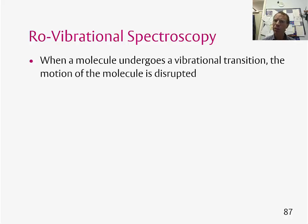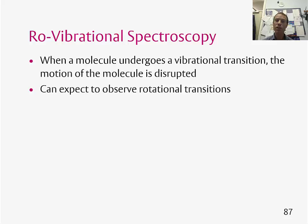When a molecule undergoes a vibrational transition — for example, v equals 0 up to v equals 1, the fundamental transition — the motion of the molecule is going to be disrupted. If the molecule was rotating at the same time it was vibrating, then the rotation of the molecule is also likely to change. So you can expect to observe rotational transitions at the same time as vibrational transitions.